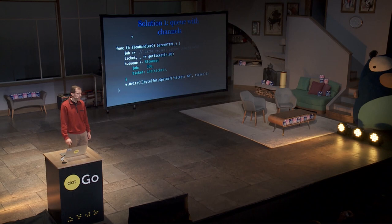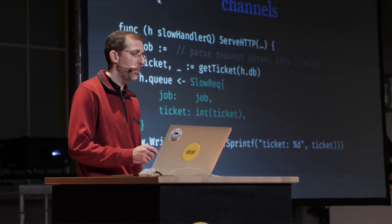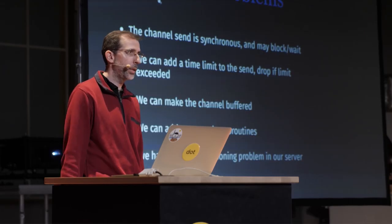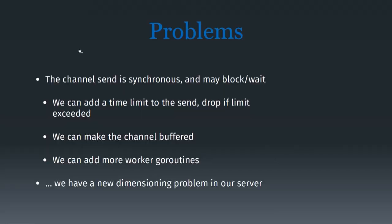Queue sends are synchronous, and they may block and wait. So are we back to square one? Not really — it's easy to fix. You can add a time limit to the send, add a channel buffer with enough capacity, or add more worker goroutines. But I was annoyed with this because it introduces a new dimensioning problem for our existing server, and I thought there has to be something better.